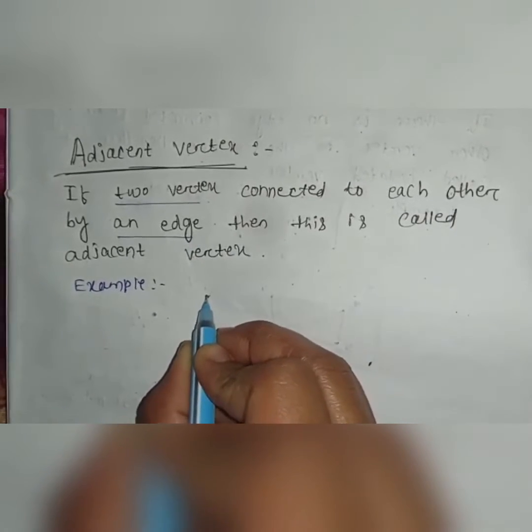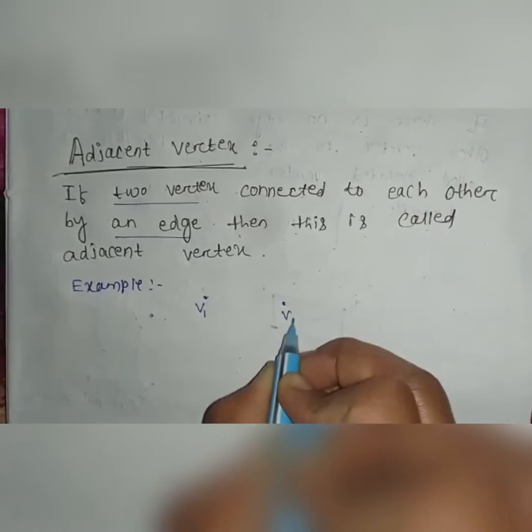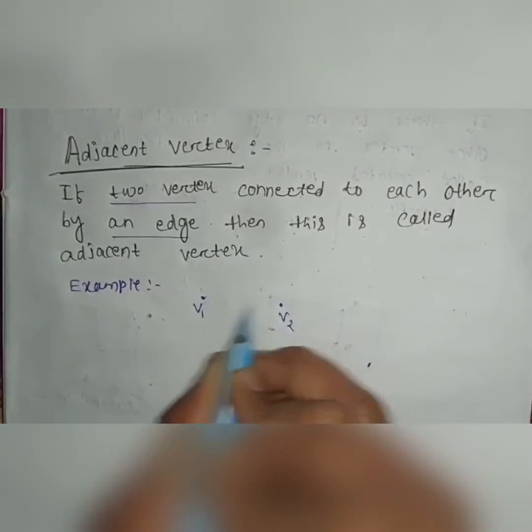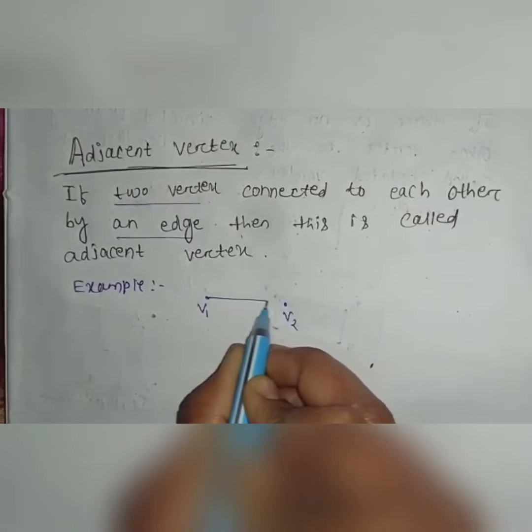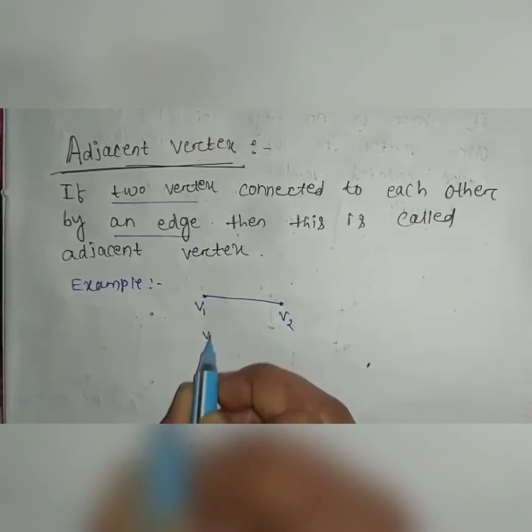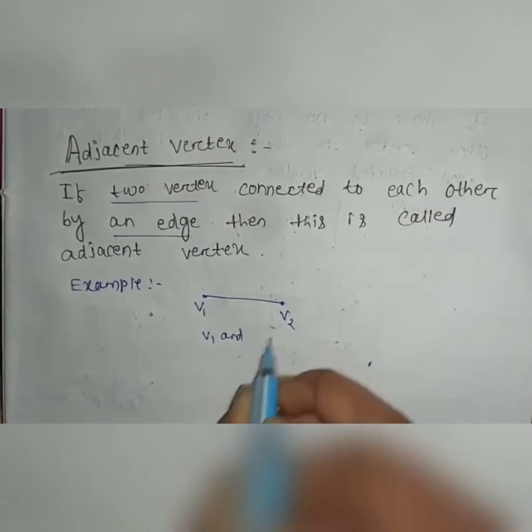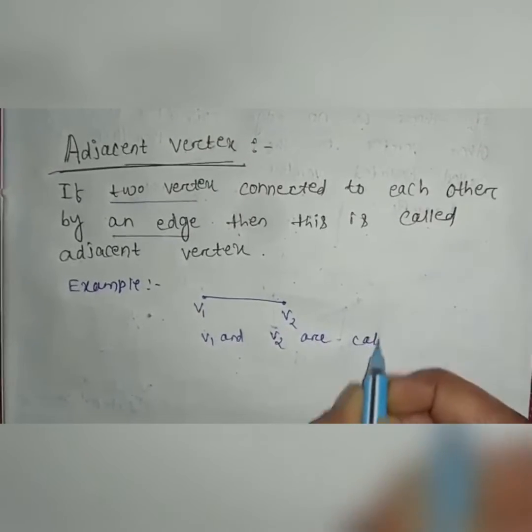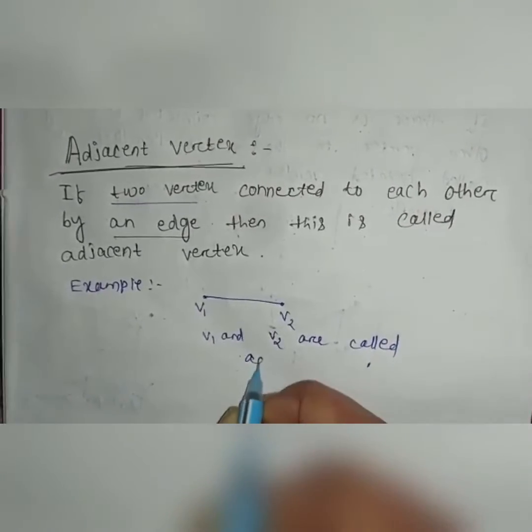Let it was V1 and it is V2. If V1 and V2 are connected to each other by an edge, then V1 and V2 are called adjacent vertex.